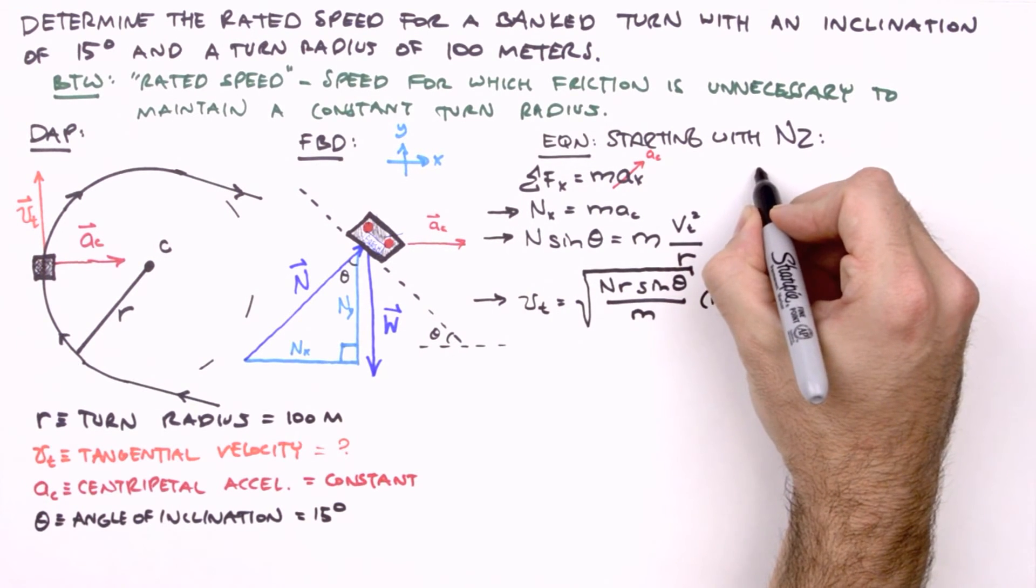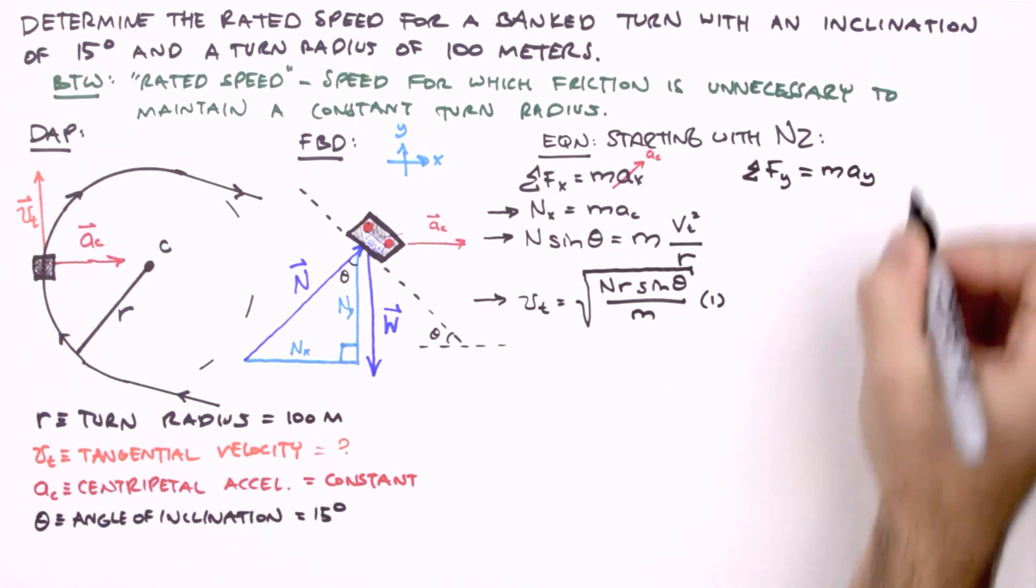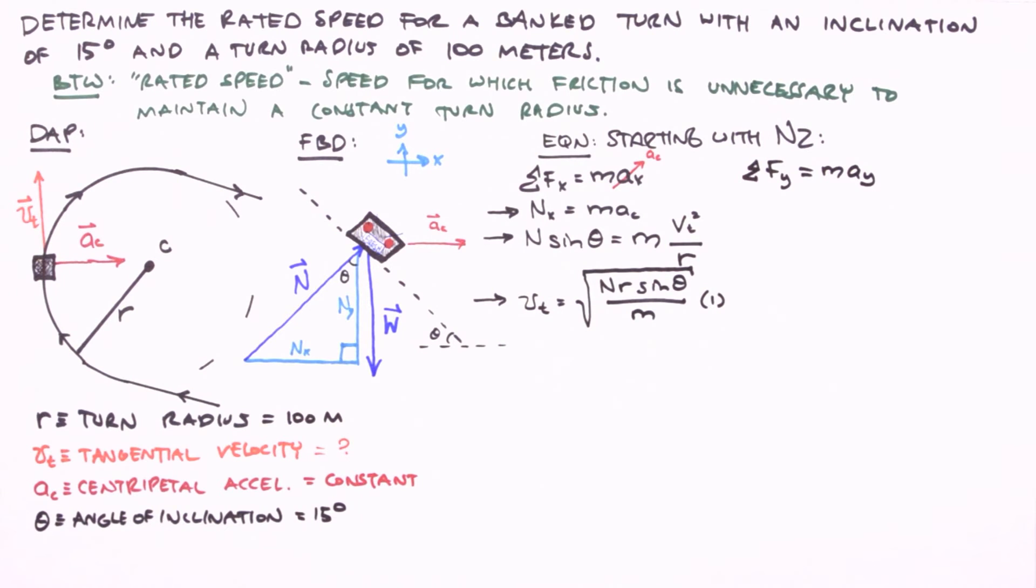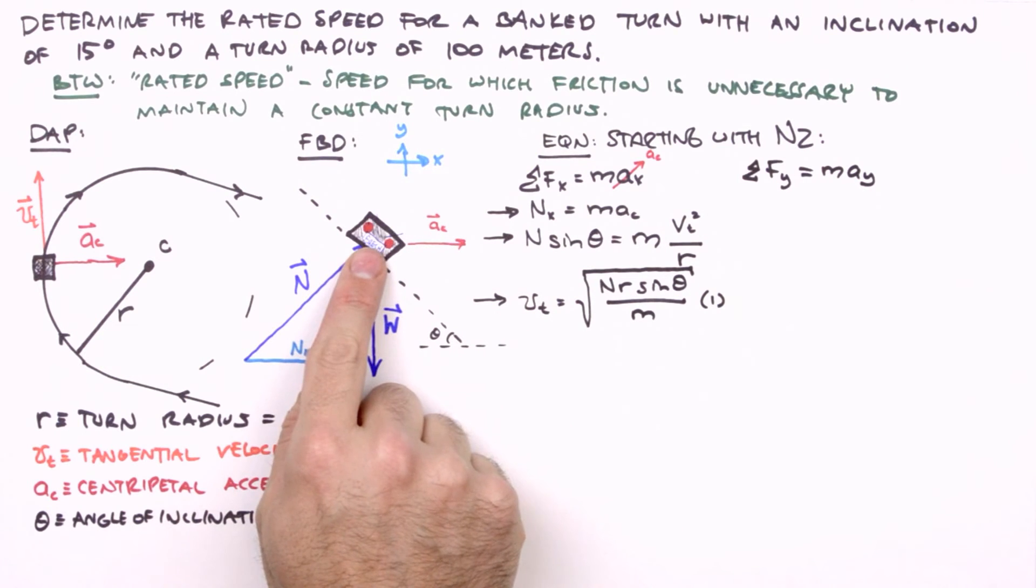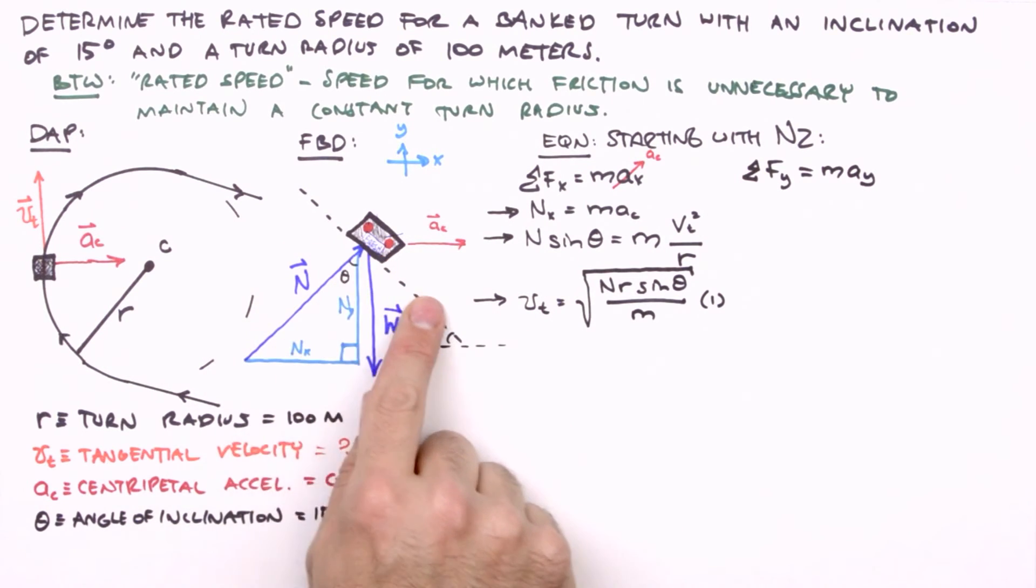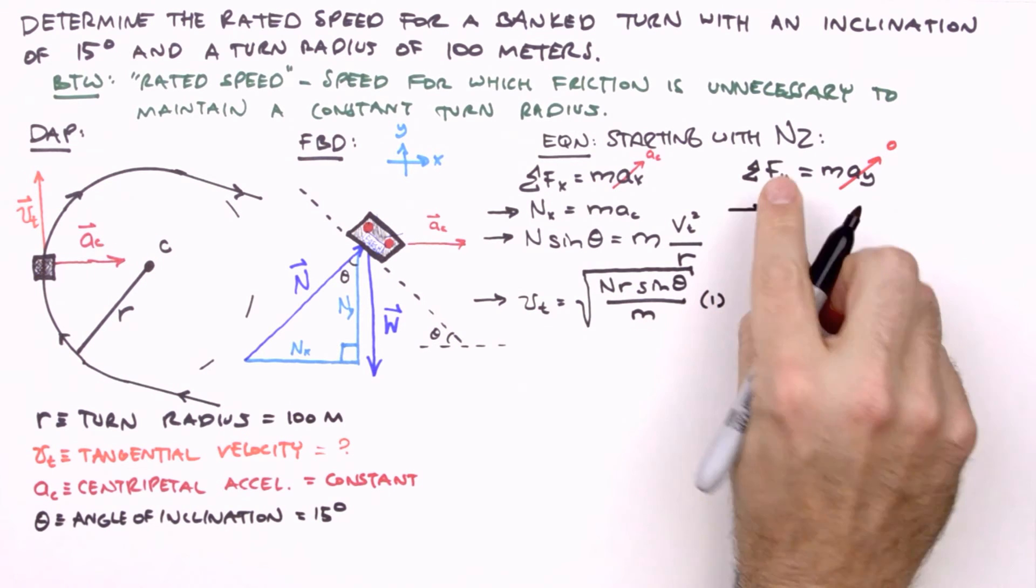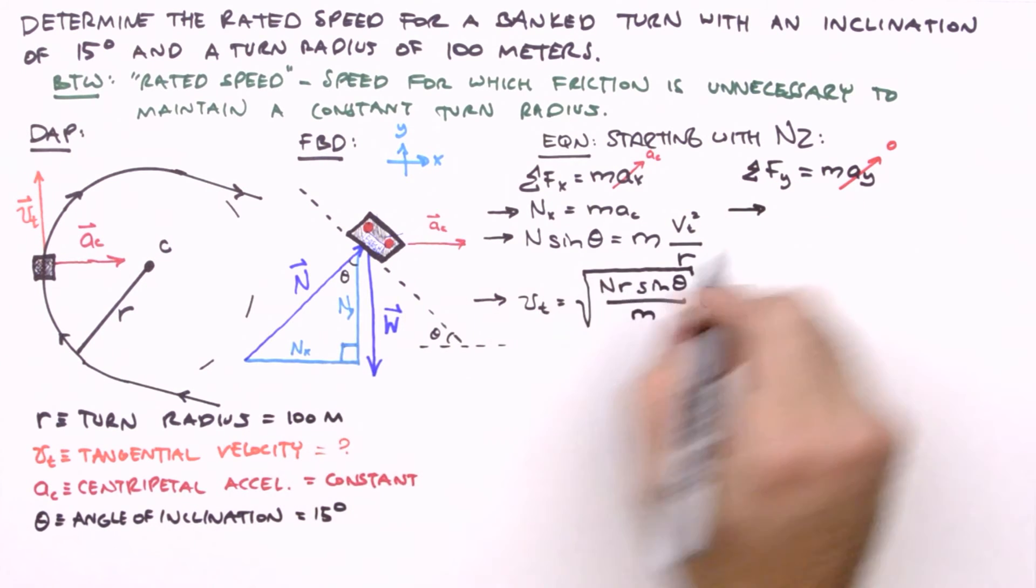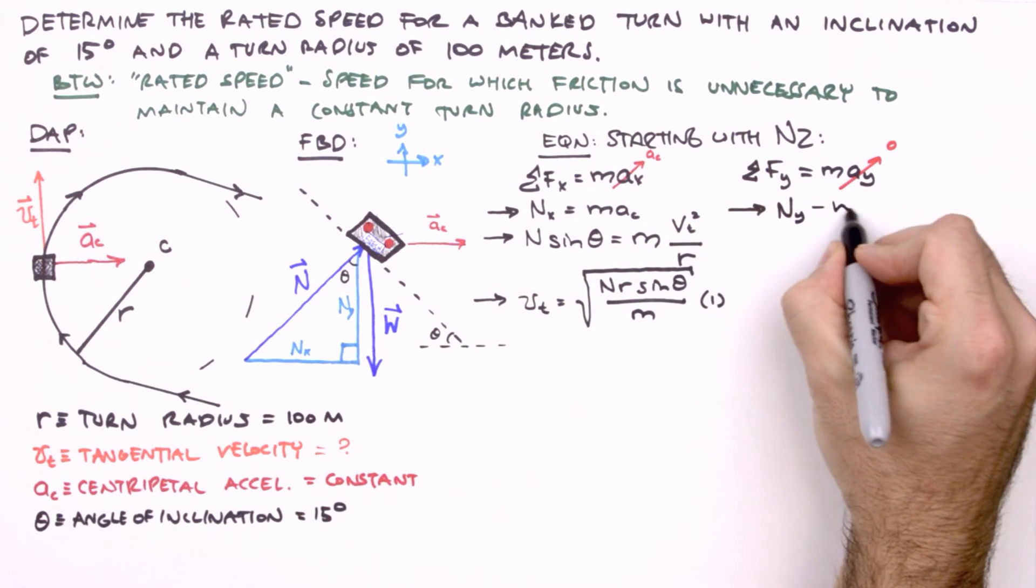So we have the sum of the forces in the y-direction equal the product of the vehicle's mass and its acceleration in the y-direction. Now, how might acceleration in the y-direction occur in a vehicle rounding a banked turn? It would appear in the lateral movement of the vehicle, up or down the incline. But since our vehicle is maintaining a constant turn radius, its position on the incline is fixed, and therefore is not accelerating in the y-direction. So we can set a sub y to 0. Summing the forces in the y-direction, we get n sub y in the positive y-direction, and the vehicle's weight in the negative y-direction, equals 0.